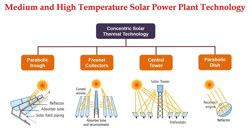In case of Fresnel collectors, solar radiation falls on the curved mirrors and then radiations are reflected to the absorber tube through which heat transfer fluid flows. In the third category, central tower — the receiver is placed at the top of the solar tower and these are heliostats. Solar radiation falls on the heliostats and from here it is reflected to the receiver. Heat transfer fluid is employed to exchange the heat and finally this can be applied for generation of electricity.